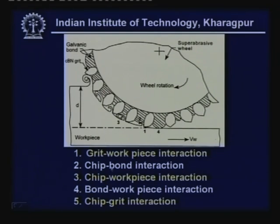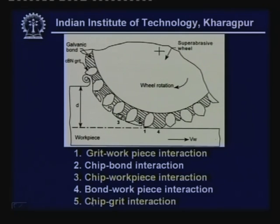The fourth interaction occurs when the bond level is high and the bond directly engages in rubbing over the workpiece, which is very undesirable but cannot be avoided. The fifth is chip-grit interaction, very similar to a chip sliding over the rake surface in turning.